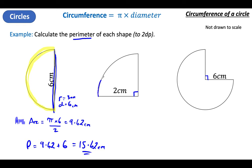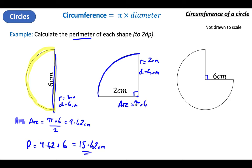How much of the circle have I got here? I've got a quarter. R equals, D equals. I've got a radius here — the center to the outside — so my radius is 2. My diameter is going to be 4. My arc then is Pi times diameter, but how much of my circle have I got? I've only got a quarter, so I'm going to divide by 4. Pi times 4 divided by 4 gives an arc length of 3.14 centimeters.